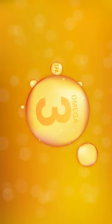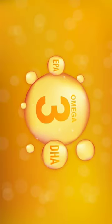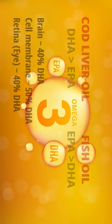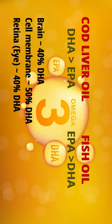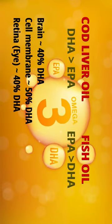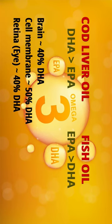Cod liver oil tends to have a higher ratio of DHA to EPA, while fish oil may contain higher levels of EPA relative to DHA.